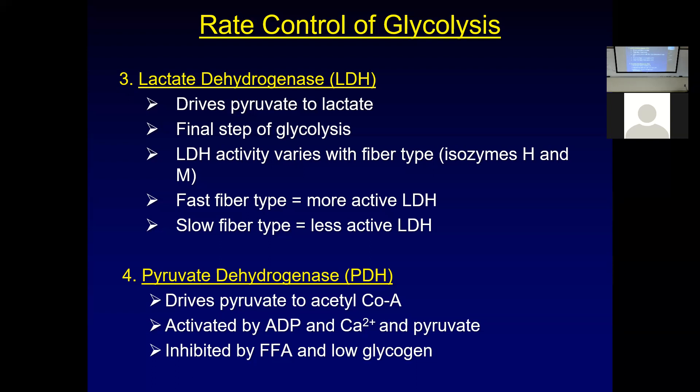As intensity keeps going up, you transition from walking to jogging to higher intensities. At some point you need so much energy that you're running both glycolysis and aerobic metabolism as fast as possible. And at some point, even that is not going to be enough ATP.